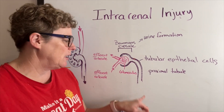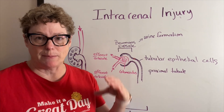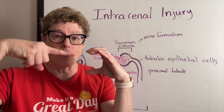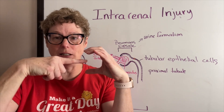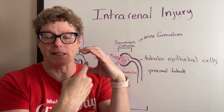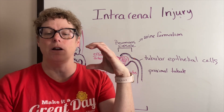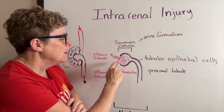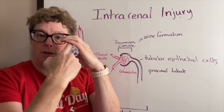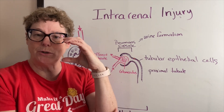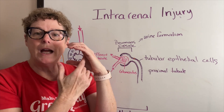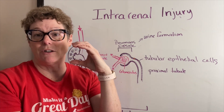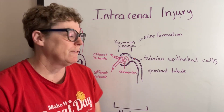Looking at this on the board: the afferent arteriole brings blood into the glomerulus, and the efferent arteriole takes blood away back to the heart. Inside Bowman's capsule and all along the proximal tubule are tubular epithelial cells — the functional piece that helps move fluids in and out.